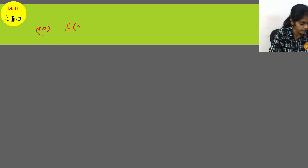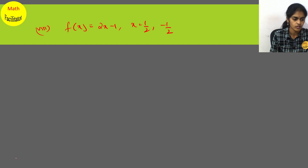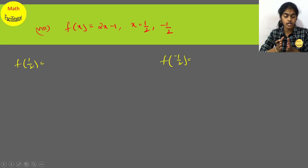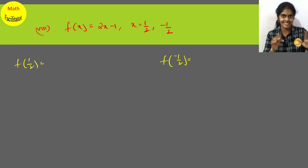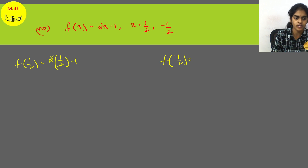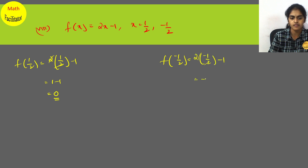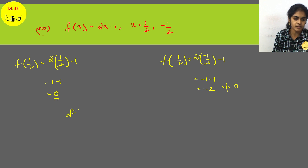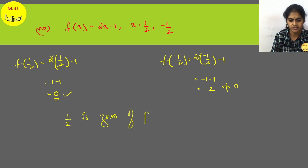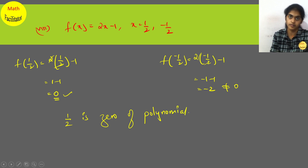For f(x) = 2x minus 1, verify x = 1/2 and x = −1/2. Substituting 1/2: 2 into (1/2) minus 1, the 2s cancel giving 1 minus 1 equals 0. So f(1/2) = 0 and 1/2 is a zero of the polynomial. Substituting −1/2: 2 into (−1/2) minus 1 gives −1 minus 1 equals −2, which is not 0. So −1/2 is not a zero.